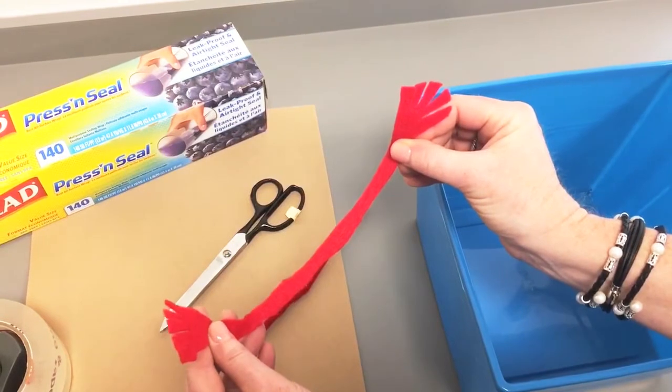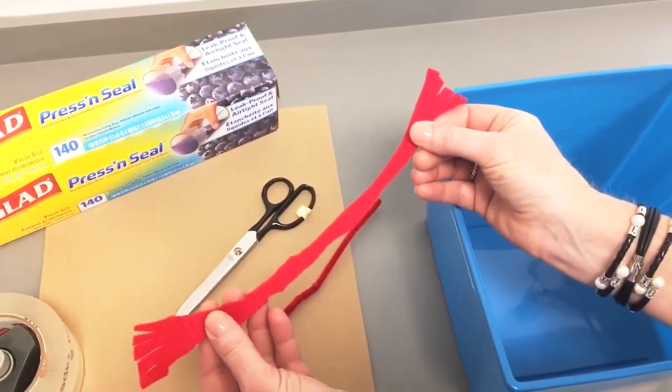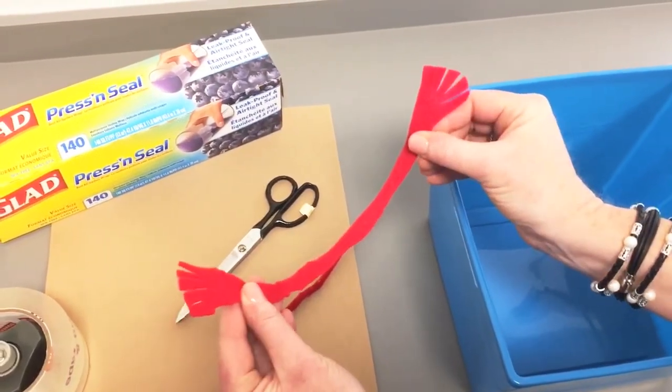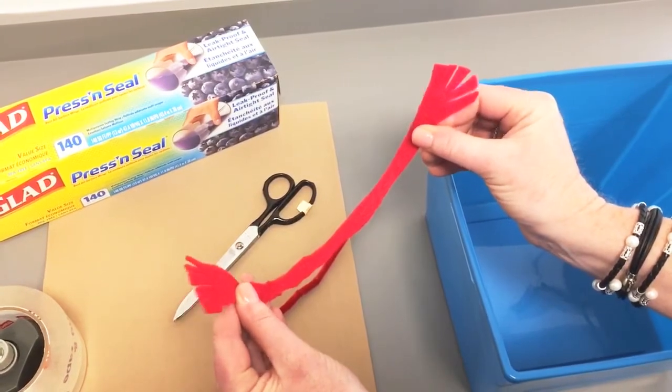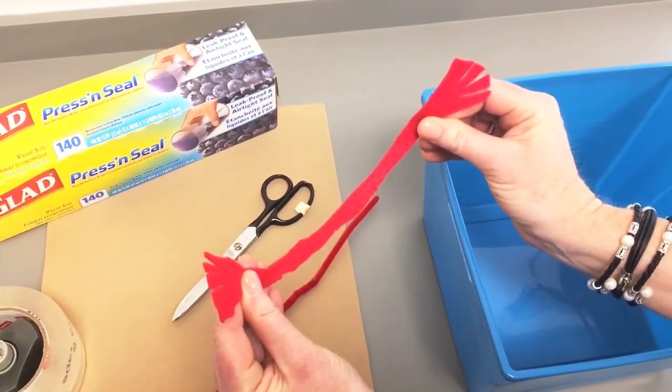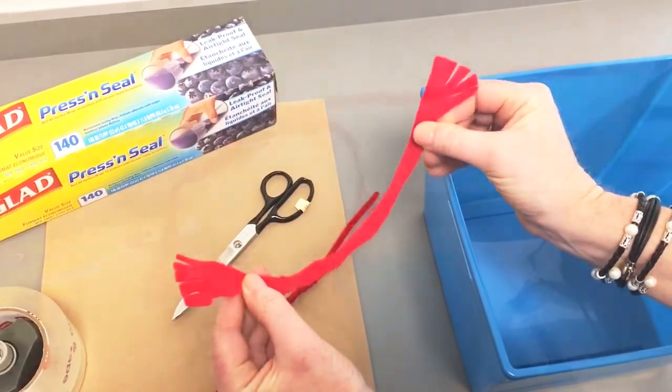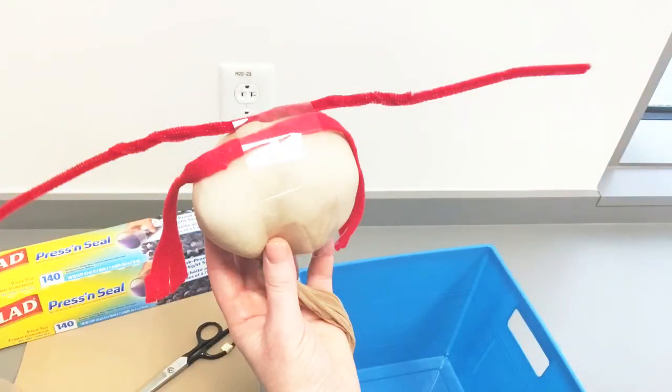Felt is then cut into the shape of the fallopian tubes, being sure to cut slits into the end of each to represent tubal fimbria. The tubes and round ligament are then taped to the uterine fundus using packing tape.